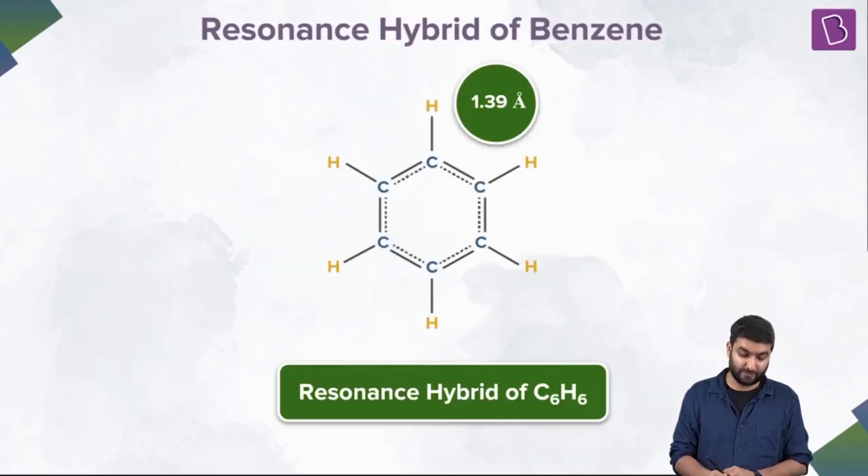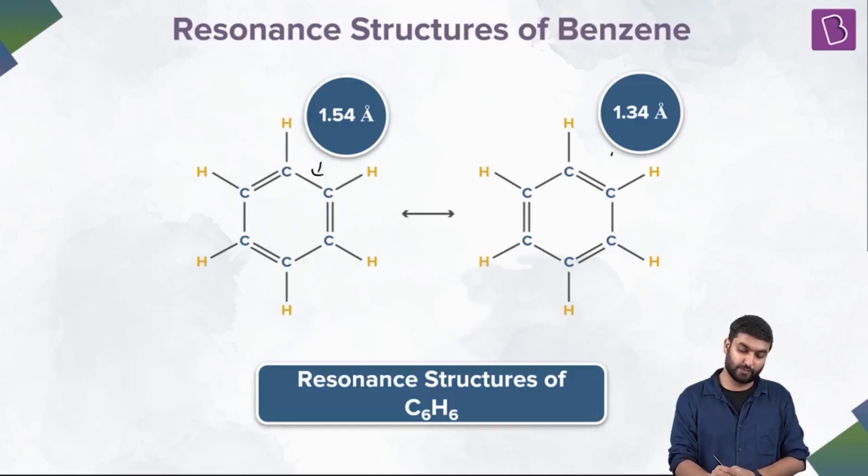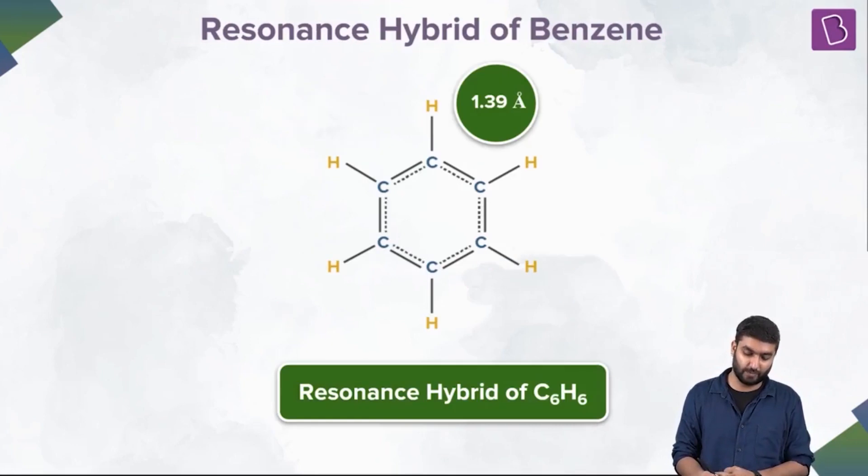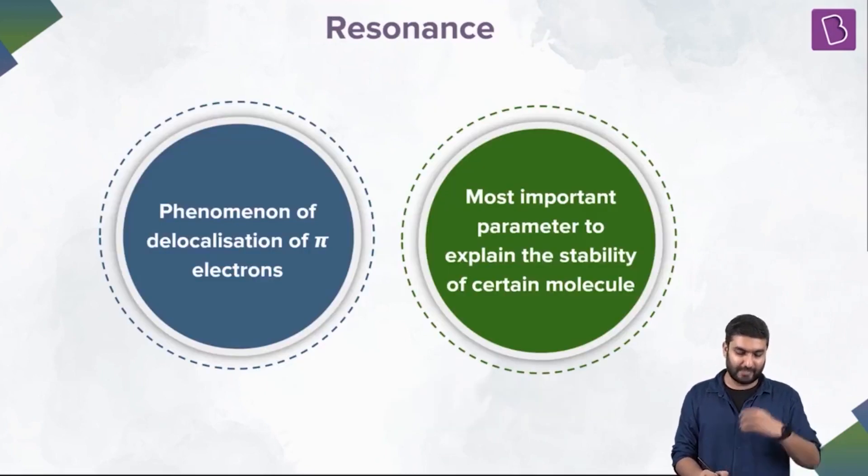So what do we have over here in hybrid? Now you can see this bond, a single bond, this bond, a double bond. And the actual bond length turned out to be between 1.54 and 1.34, and it turned out to be 1.39 angstrom. Now the point is, let's look at resonance again. Let's try to collect all of our understanding of this session so far. Let's try to go through it again.